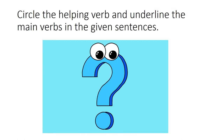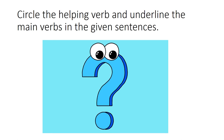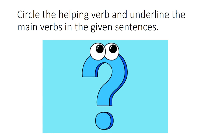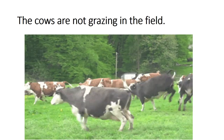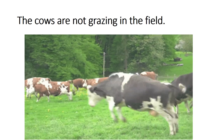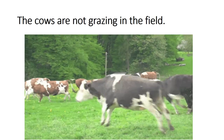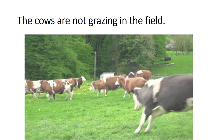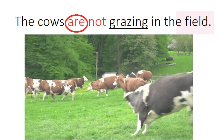Circle the helping verb and underline the main verbs in the given sentences. आपकी book में ये sentences दिए हैं, पहले खुद से पढ़ लें. Main verb को underline करना है और helping verb को circle करना है. पहला sentence: The cows are not grazing in the field. Cows यानी गाएं, grazing यानी घास चरना, field यानी खेत. 'Grazing' main verb है और 'are' helping verb है.